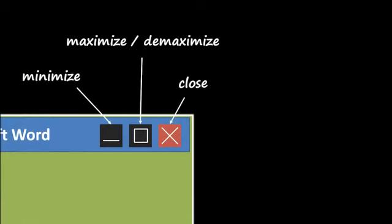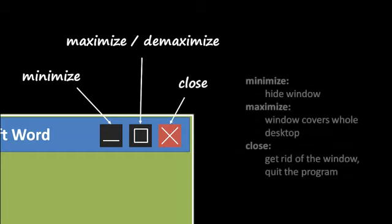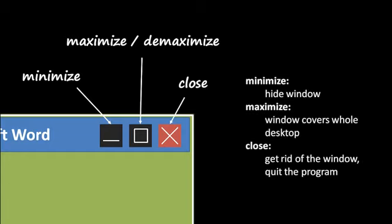In the top right of every program window you should see three buttons. On the left there's the minimize button, in the middle there's the maximize/demaximize button, and on the right there's a close button. The close button closes the window, gets rid of it, exits the program, and makes the program stop running.